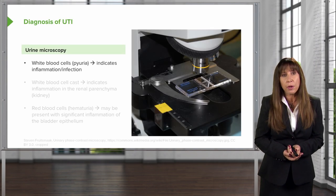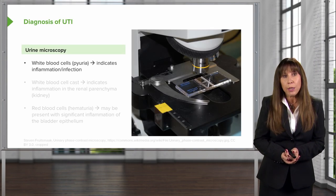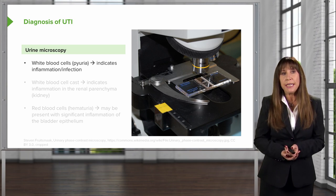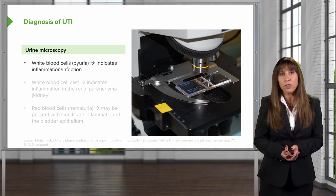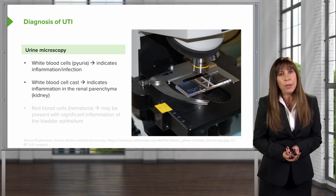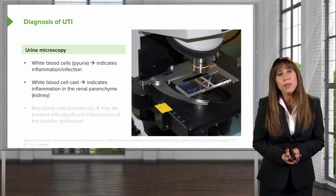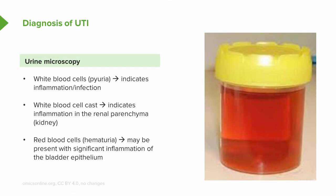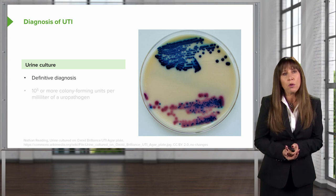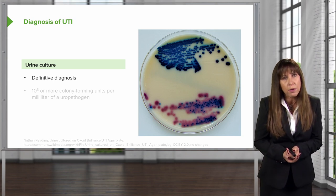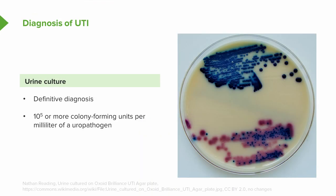Urine microscopy is also very important. We can actually see white blood cells — called pyuria — which indicates inflammation or infection. Occasionally, if somebody has pyelonephritis or upper urinary tract infection, we can see a white blood cell cast. Red blood cells or hematuria may be present with significant inflammation, particularly of the bladder epithelium. We also want to obtain a urine culture, which will give us the definitive diagnosis with the etiologic agent — growth of 10 to the 5th or more colony-forming units per milliliter of a uropathogen is considered positive.